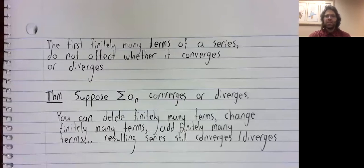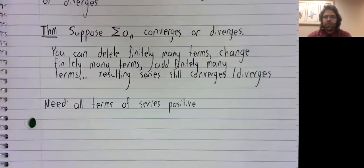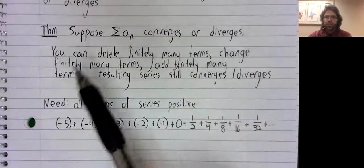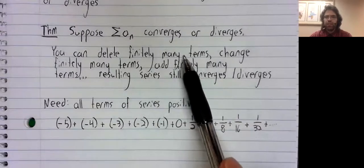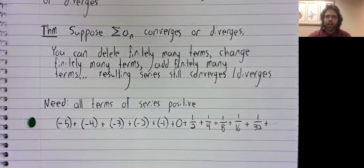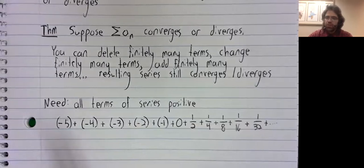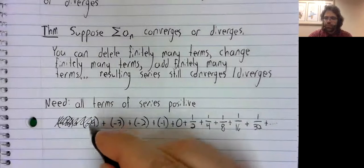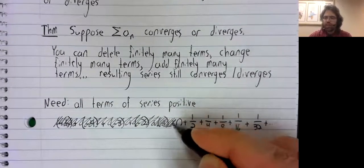So suppose we need all of the terms of the series to be positive. But we have the following series. So as long as these are the only negative numbers, we can just scratch them out, and that won't change whether the series converges or not.